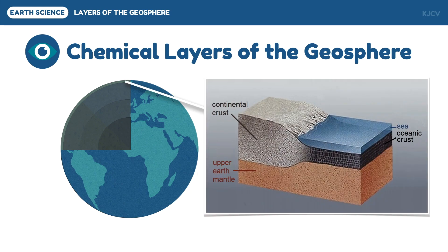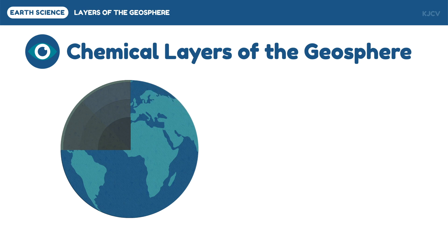The uppermost or outermost chemical layer of the geosphere is the crust. The crust is formed through the differentiation of the earth — it was theorized that upon the cooling of the earth, lighter materials rose near the surface forming the crust. The land masses comprise the continental crust and the large bodies of water comprise the oceanic crust. The abundant elements found on the earth's crust, studied using its rocks, are oxygen, silicon, aluminum, and iron.